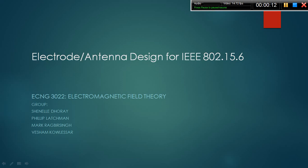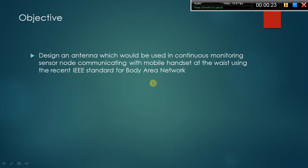The purpose of this project is to design an antenna which will be used in a continuous monitoring sensor node communicating with a mobile handset at the waist using the recent IEEE standard for body area network. The IEEE standard used was the IEEE 802.15.6, which describes specifications for short range wireless communication within the proximity or even inside the human body. The standard utilizes existing industrial, scientific, and medical bands as well as frequency bands approved by national medical or regulatory authorities.